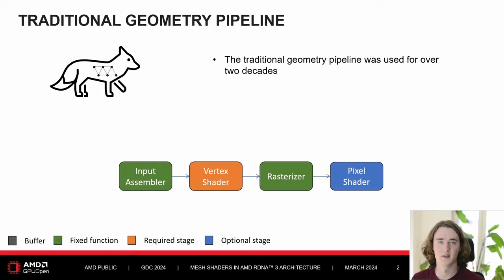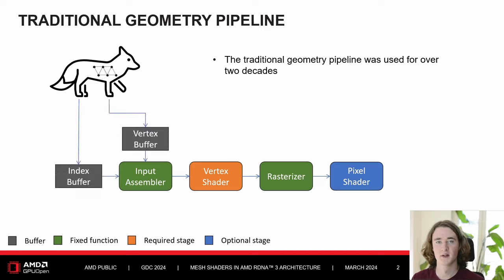For the past decade, the geometry pipe on a GPU looked like this, with an input assembler feeding into a programmable vertex shader, which would transform your vertex positions. Those transformed vertex positions would get assembled into triangles, and those triangles would be rasterized on screen. If you then want to render a triangle mesh, you first have to split it into a vertex buffer and an index buffer, supply both to the input assembler, and that would take care of invoking the vertex shader.